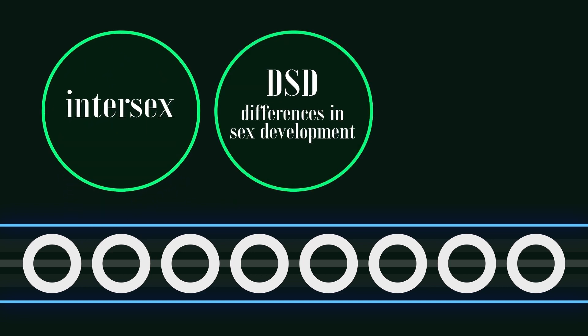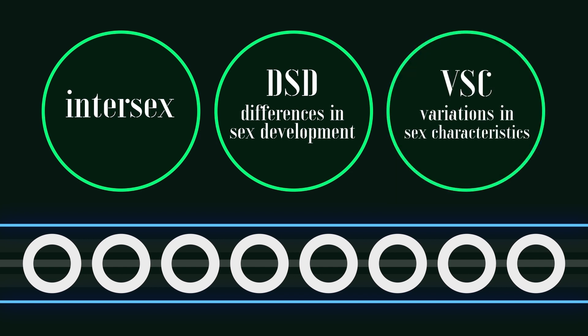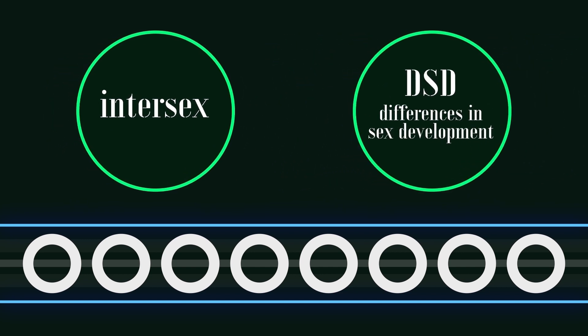So let's begin with terminology. There are a few ways to describe intersex conditions. You might see DSD — disorders or differences in sex development — or you might see VSC, variations in sex characteristics. Intersex, DSD, and VSC are all commonly used as synonyms. We'll be using intersex and DSD interchangeably.